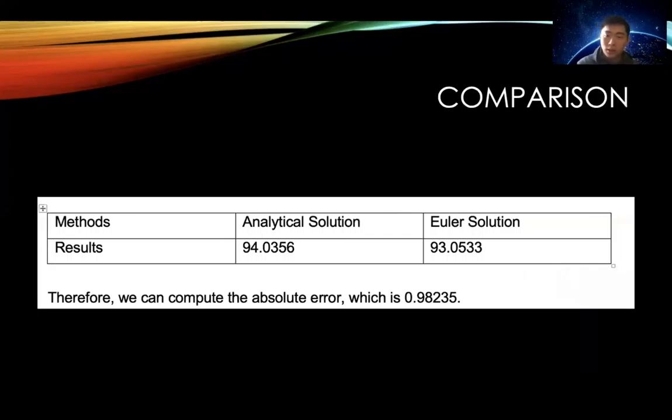Next we are going to see the comparison between these two solutions. At t equals one, we can see the solution for analytical solution, the result is 94.03. For the Euler solution it's 93.0533. Therefore we can compute the absolute error, which is 0.98235. We can see the error is pretty small, very small compared with the result.